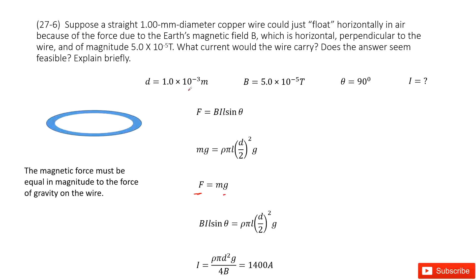And then we look at given quantities. The diameter is given. B is given. Theta is given. Current we don't know, so we are interested. So we write it there.